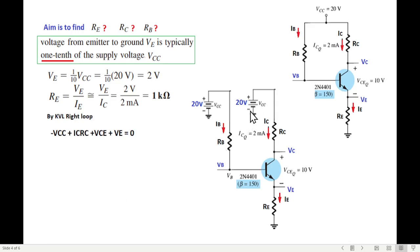Now for the right loop we write the KVL equation. Starting from here: -VCC + ICRC + VCE + VE = 0. So ICRC, then RC, we know all of them. Put the values: VCC was 20, VCE is 10 volt, VE we calculated 2, ICQ or IC is 2 milliampere. So RC is 4 kΩ.